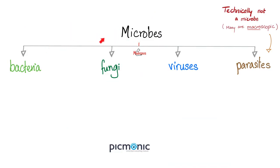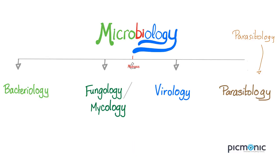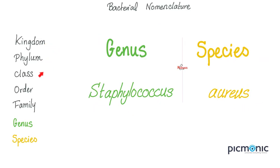Microbes are bacteria, fungi, viruses, or parasites. That's why the field of microbiology studies bacteriology, mycology, virology, and parasitology. Taxonomy goes: kingdom, phylum, class, order, family, genus, species.